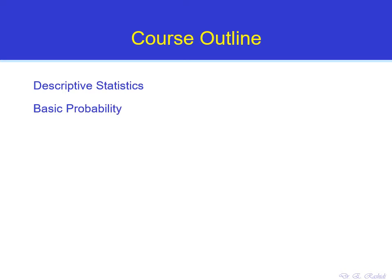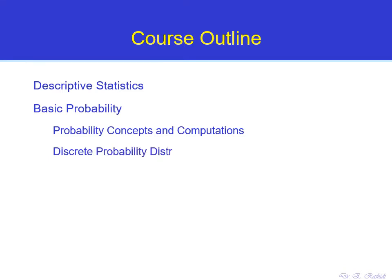The next big topic, which is very interesting and fun, is probability. We're going to learn about the concept of probability and how to compute probabilities in different and difficult situations. We're going to learn about a set of rules, such as counting rules, to help you compute probabilities in challenging situations. Also, we're going to learn about probability distributions, such as discrete probability distributions and continuous probability distributions. Don't worry about what discrete and continuous mean right now — we're going to learn it through the course, just be patient.